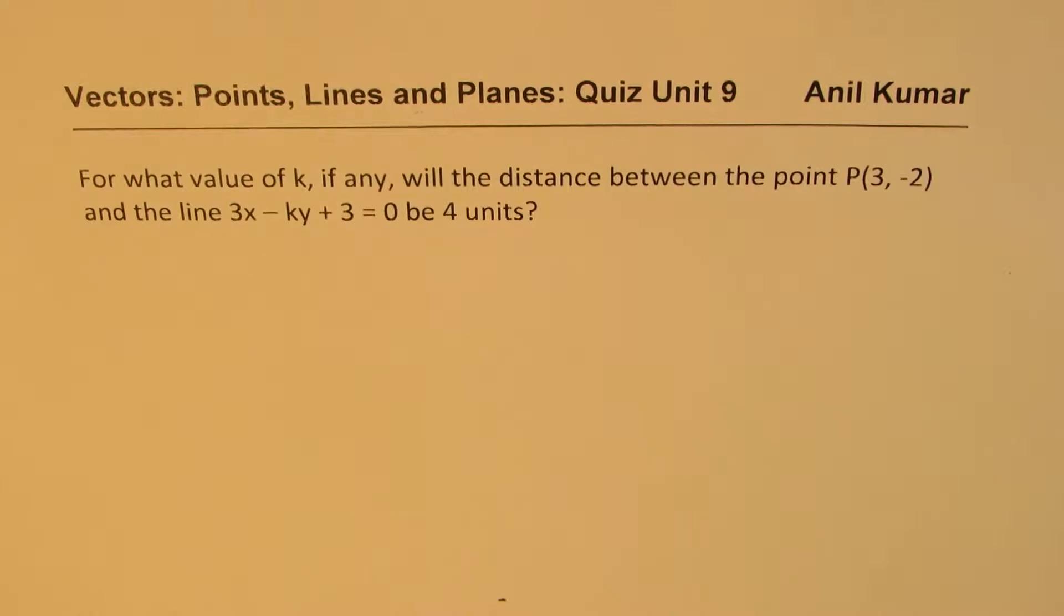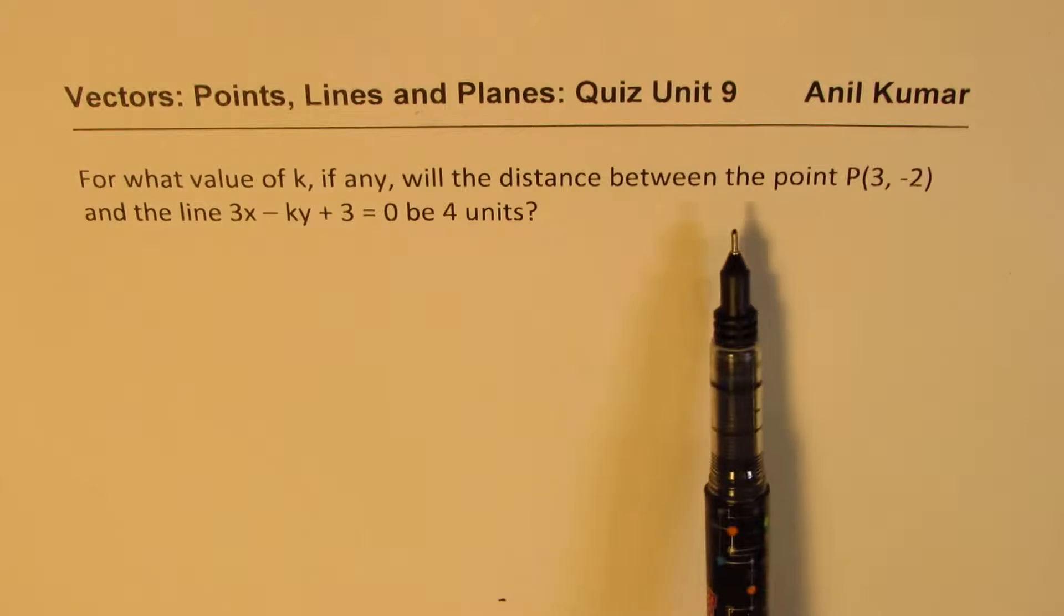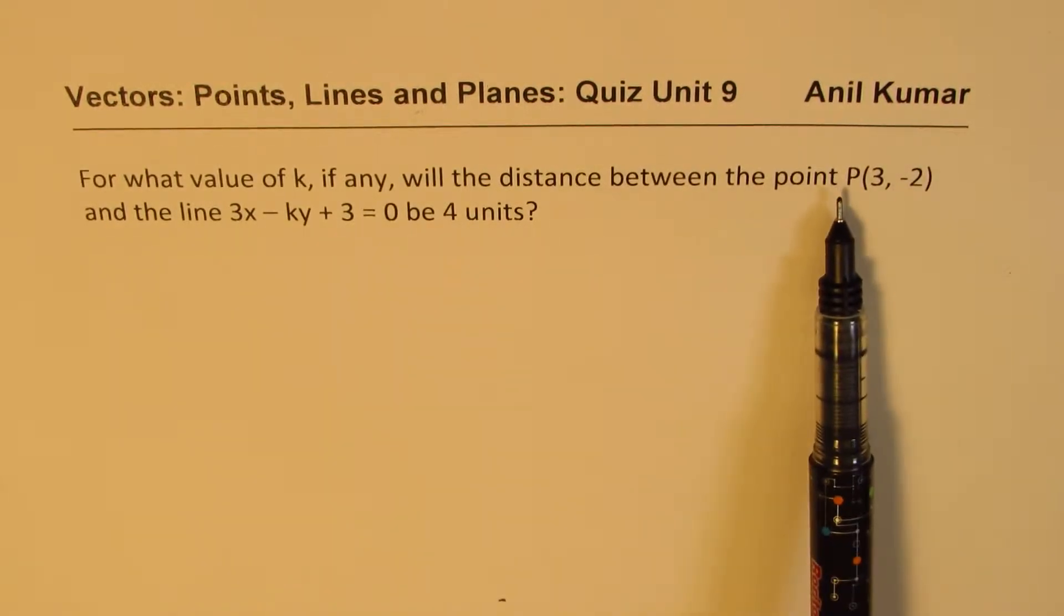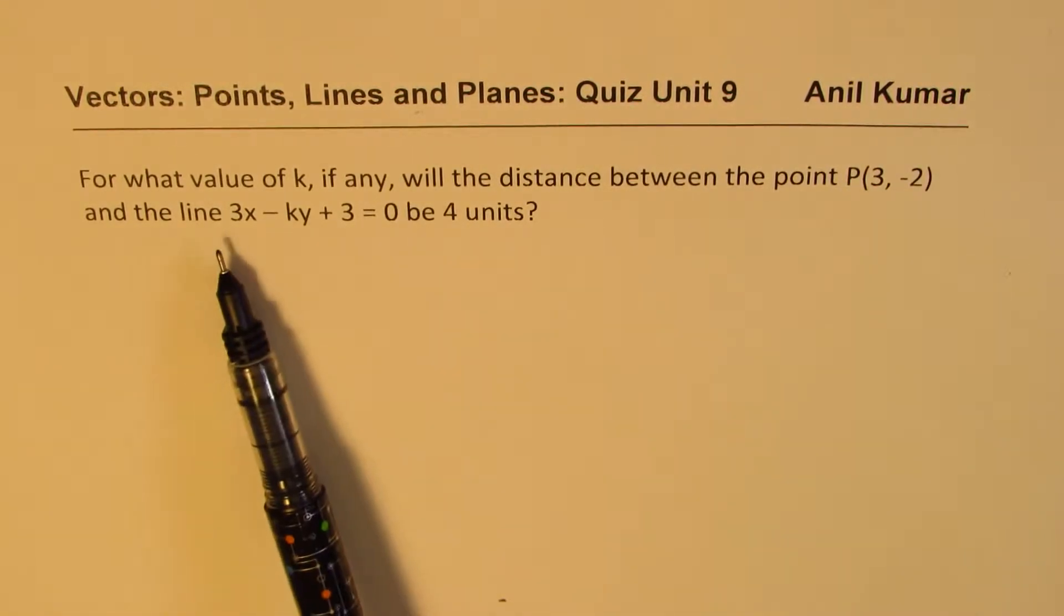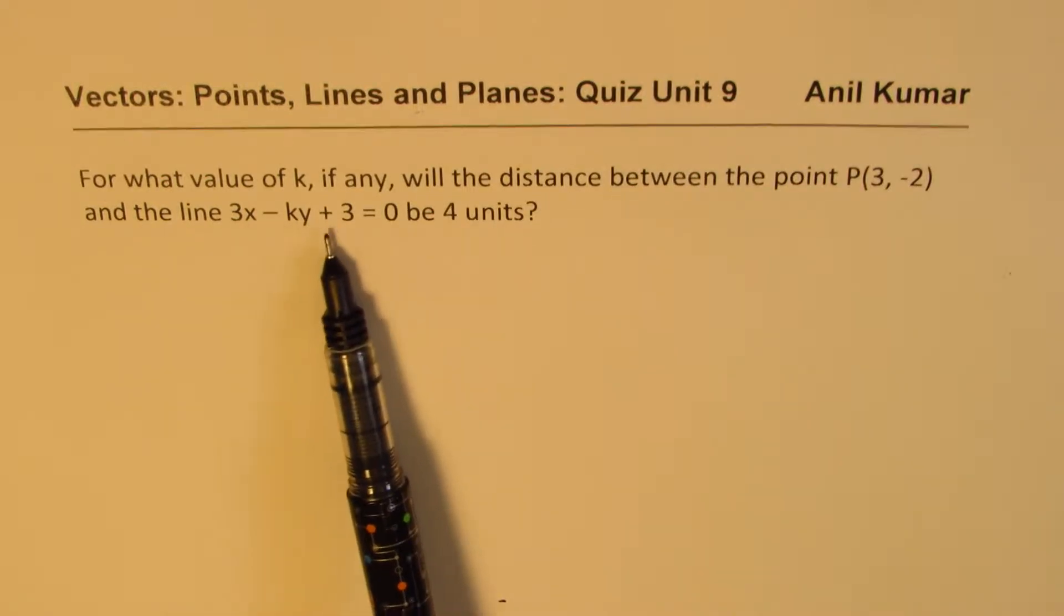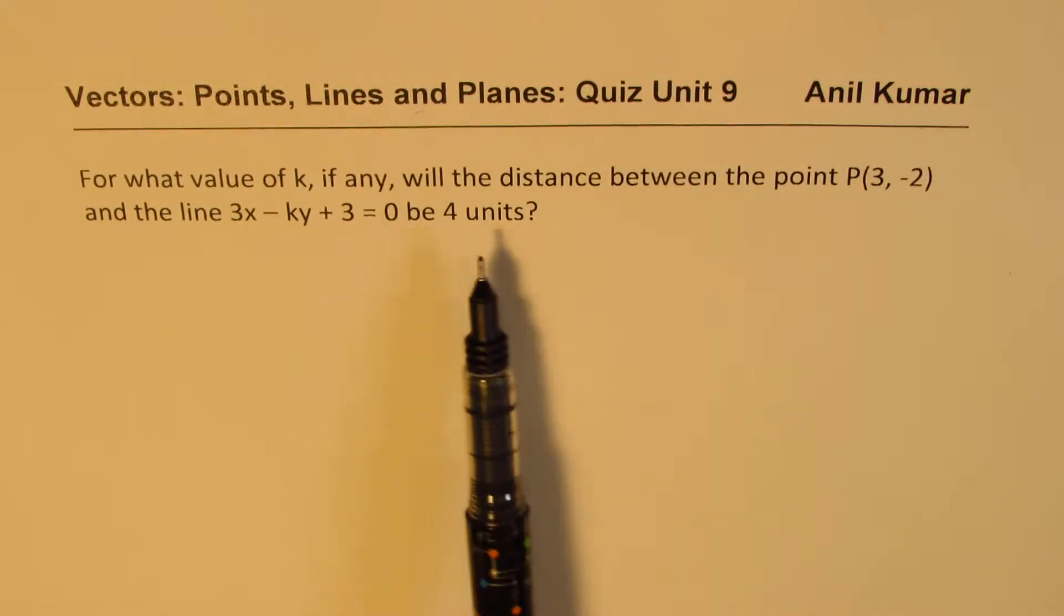The question here is, for what value of k, if any, will the distance between the point P(3, -2) and the line 3x - ky + 3 = 0 be 4 units?